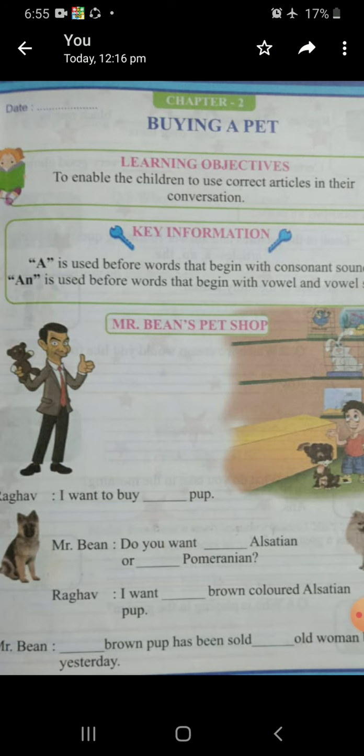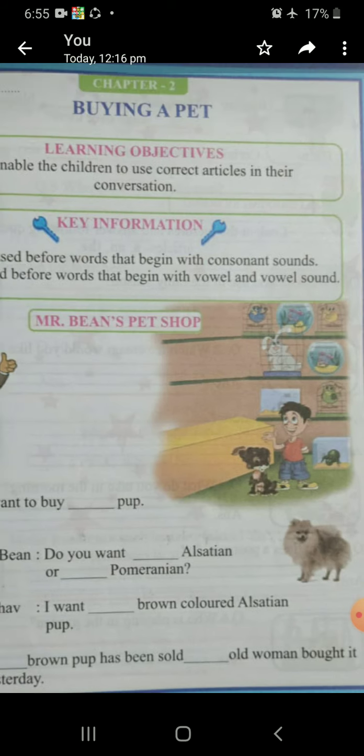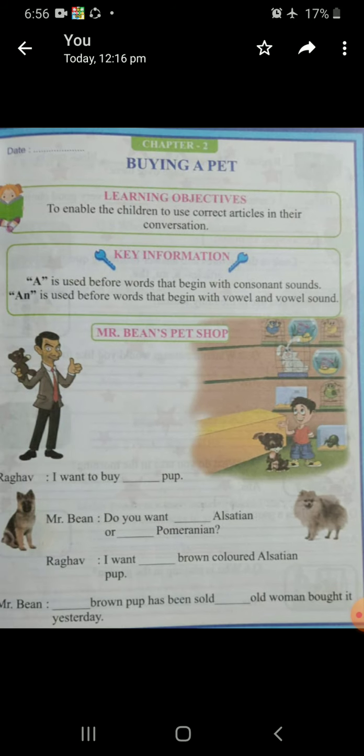Next. Raghav: I want dash brown colored Alsatian pup. See, the word after the dash is 'brown'. B is a consonant, so we will write A. I want a brown colored Alsatian pup. Done. Next is Mr. Bean dash brown — brown we have already done, so we will write A.